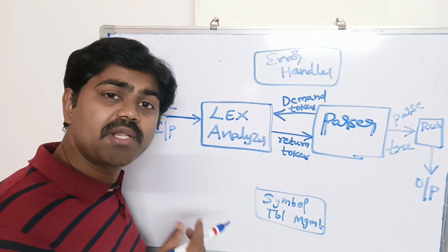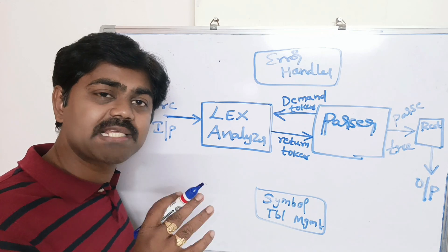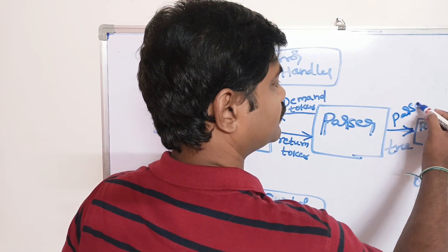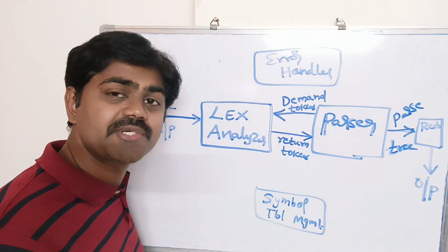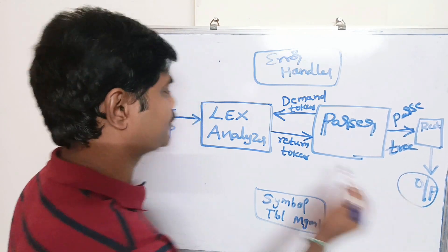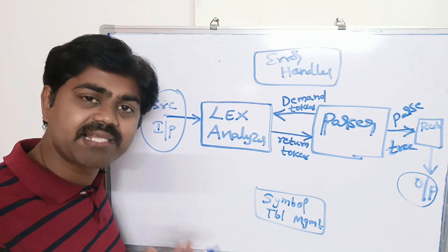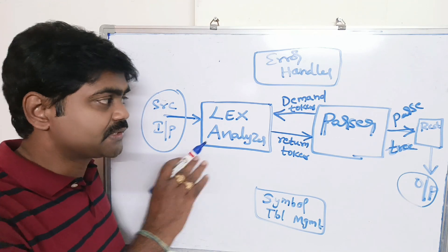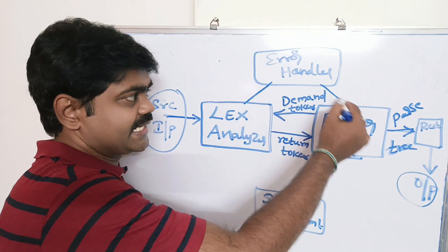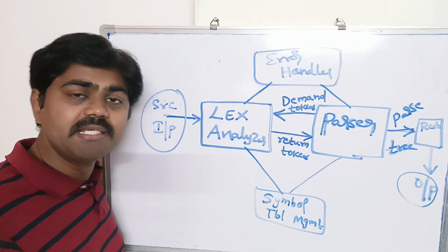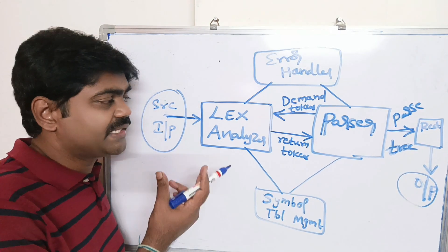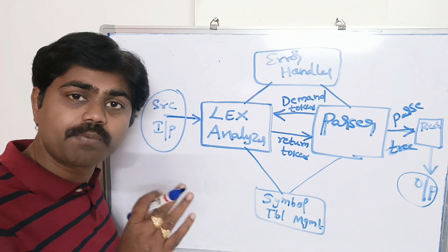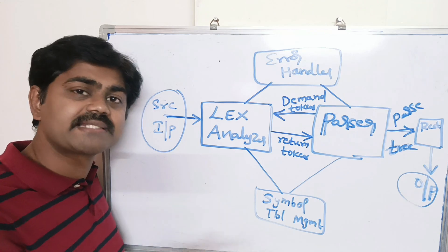Once the parser receives the tokens, it generates a parse tree. The remaining phases form the rest of the compiler, which finally produces the target output. The error handler and symbol table are shared across all phases. So the overall flow is: the parser demands tokens, the lexical analyzer reads the source input, divides it into tokens, and provides them to the parser.